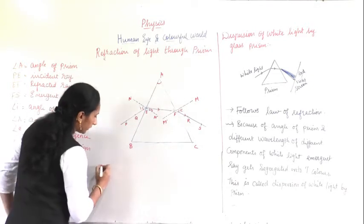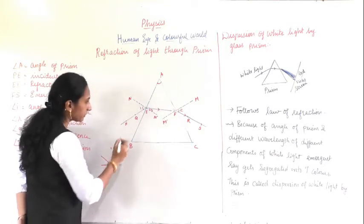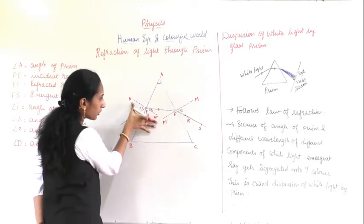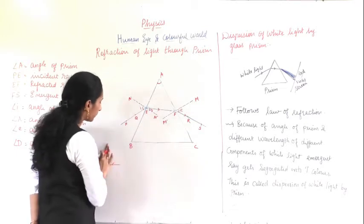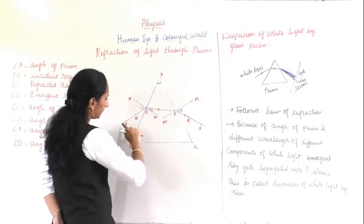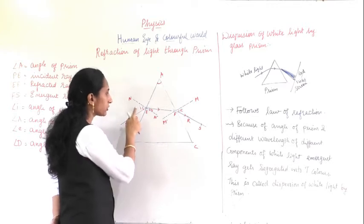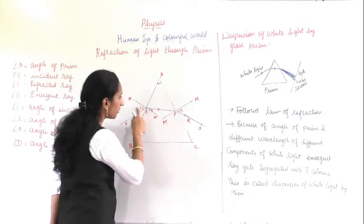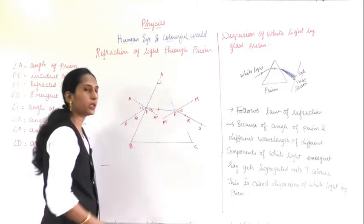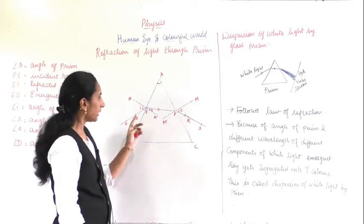When light travels from a rarer to a denser medium, it bends slightly towards the normal. Just as you studied in the law of reflection — where there is an incident ray and a normal — here also I have drawn a normal. N and N-dash is the normal to the incident ray. The angle between the normal and the incident ray is called the angle of incidence, and the angle between the refracted ray and the normal is called the angle of refraction, written as angle R.